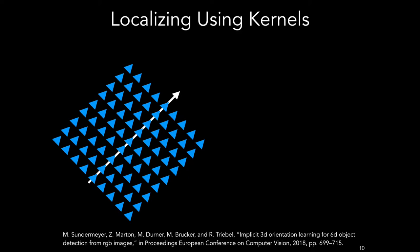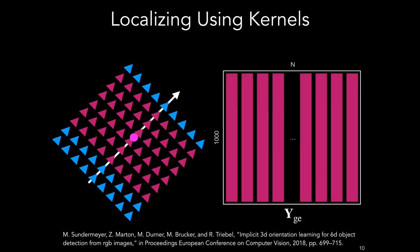Our localization method is similar to the method used in this paper from Sundermeyer for 6D object detection, in that we generate a codebook of encoded reference images offline, and a live image is then matched to this codebook. We do this by encoding all of the reference images we had previously rendered in Google Earth around the desired path. When we're trying to localize, we then select a subset of the reference images that are near our current estimate for the pose. These encoded reference images are then stacked into a 1000 by n dimensional vector denoted capital YGE.